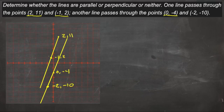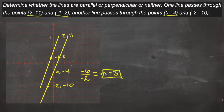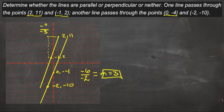The easiest way to check is to compare their slopes. For the second line, x changes by -2 and y goes from -4 to -10, a change of -6. So the slope is -6 over -2 = 3. For the first line, x changes by -3 and y goes from 11 down to 2, a change of -9. So -9 over -3 is also m = 3. These two lines are indeed parallel.